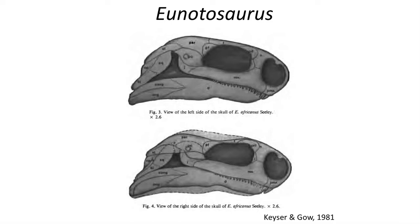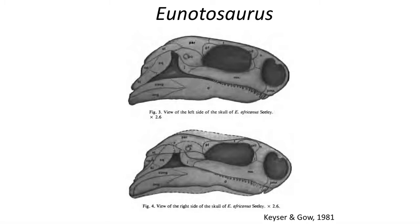The skull lacked any temporal openings on the side of the head and instead had a gap along the lower margin, similar to other Permian parareptiles. It was strongly agreed that Eunotosaurus was a parareptile, a derived anapsid reptile. But the molecular phylogeny was arguing that turtles arose from a diapsid reptile. Was there something that earlier paleontologists had overlooked?